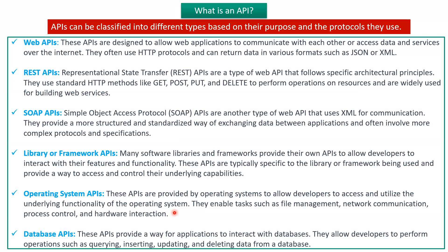The fifth one is Operating System APIs. These APIs are provided by operating systems to allow developers to access and utilize the underlying functionality of the operating system. They enable tasks such as file management, network communication, process control, and hardware interaction.